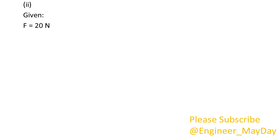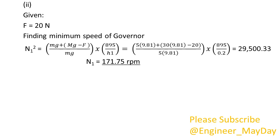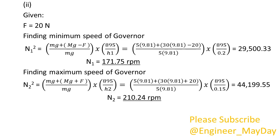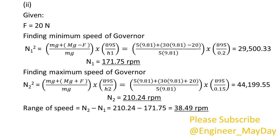Given F equals 20 Newtons. Finding minimum speed of governor: N1 equals 171.75 RPM. Notice the formula is different. Finding maximum speed of governor: N2 equals 210.24 RPM. Notice for minimum speed, friction F is negative and for maximum speed, friction F is positive. Range of speed equals 38.49 RPM.